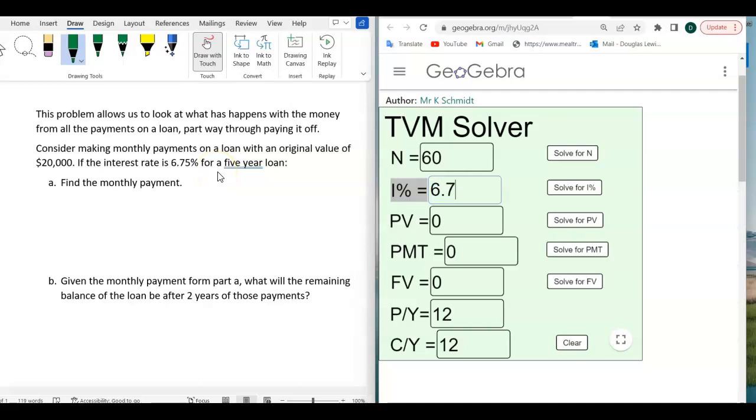The interest rate is 6.75, and you don't convert this to its decimal form, you just leave it at 6.75. And then the present value, that is the present value of the loan is the $20,000.